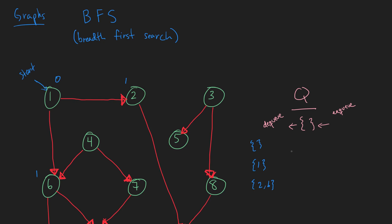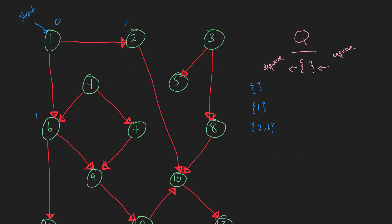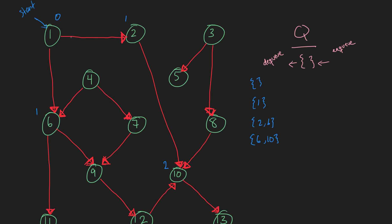Node 2 is up next in the queue. We dequeue 2 and enqueue its adjacency list, which consists of 10. So now we have 6 and 10 in the queue. Node 10 is at a distance of 2 from the starting point. We should also be drawing the edges we've searched: the path from 1 to 2 and from 1 to 6.